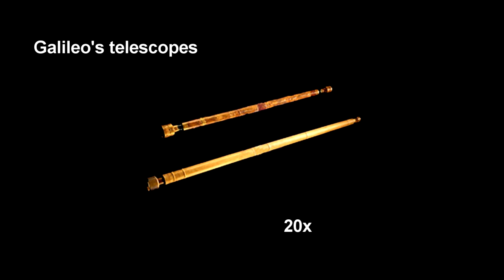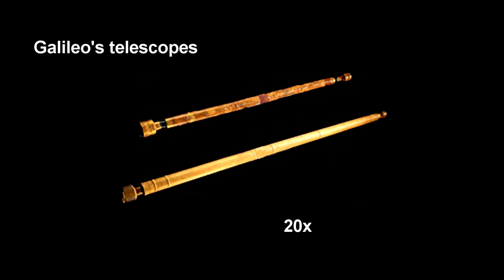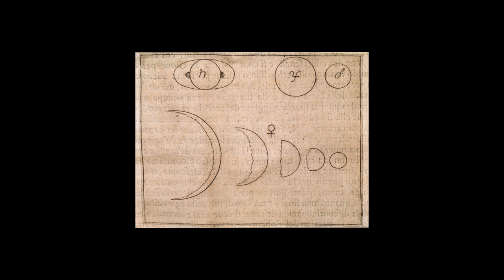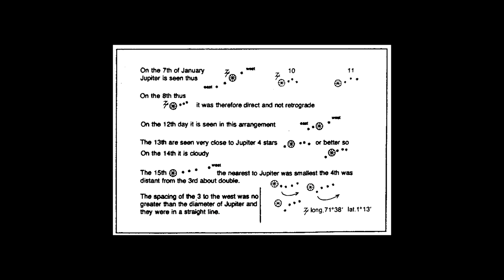And Galileo, using the newly invented telescope, discovered that the Milky Way cloud was actually stars, that the sun had spots on it that indicated the sun was rotating, that Venus has phases like the moon indicating it goes around the sun, and Jupiter has four moons.